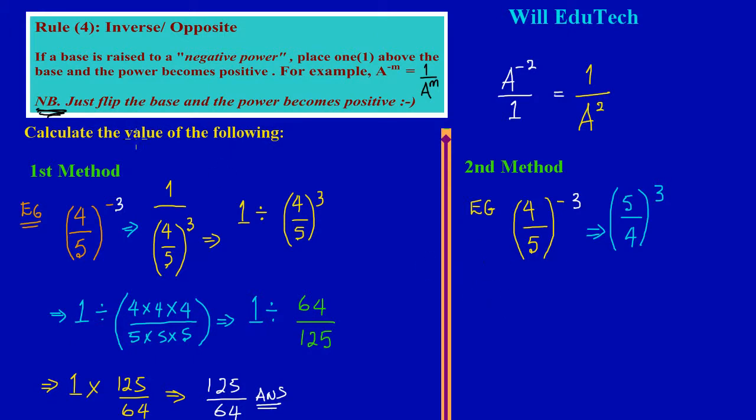What I have left here is in my numerator five times five times five, all upon in my denominator four times four times four. That implies I would have five times five is 25, 25 times five is 125, all upon four times four is sixteen, and sixteen times four is sixty-four. That's my answer.